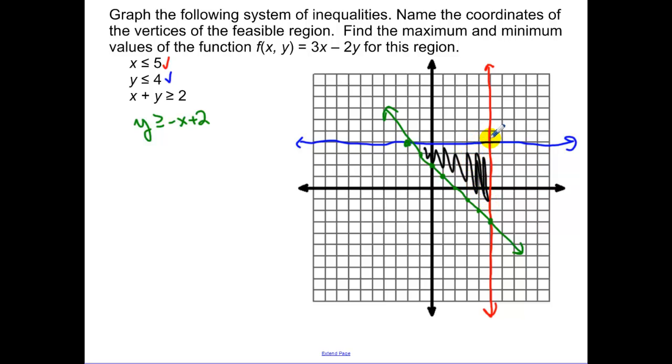Now what we have to do is we have to find the vertices of our bounded region. So one of them is 5, 4. Another one here, this is negative 2, positive 4. And then we have our last one here, which that one is 5, and negative 3.